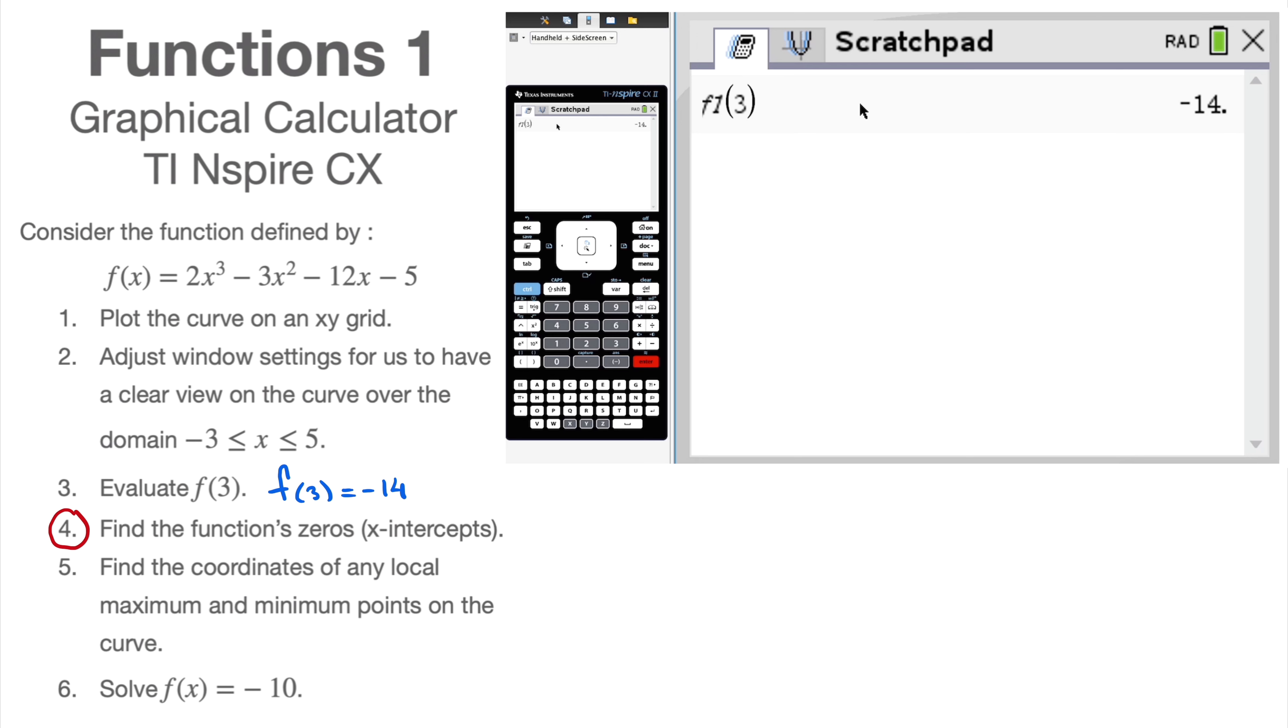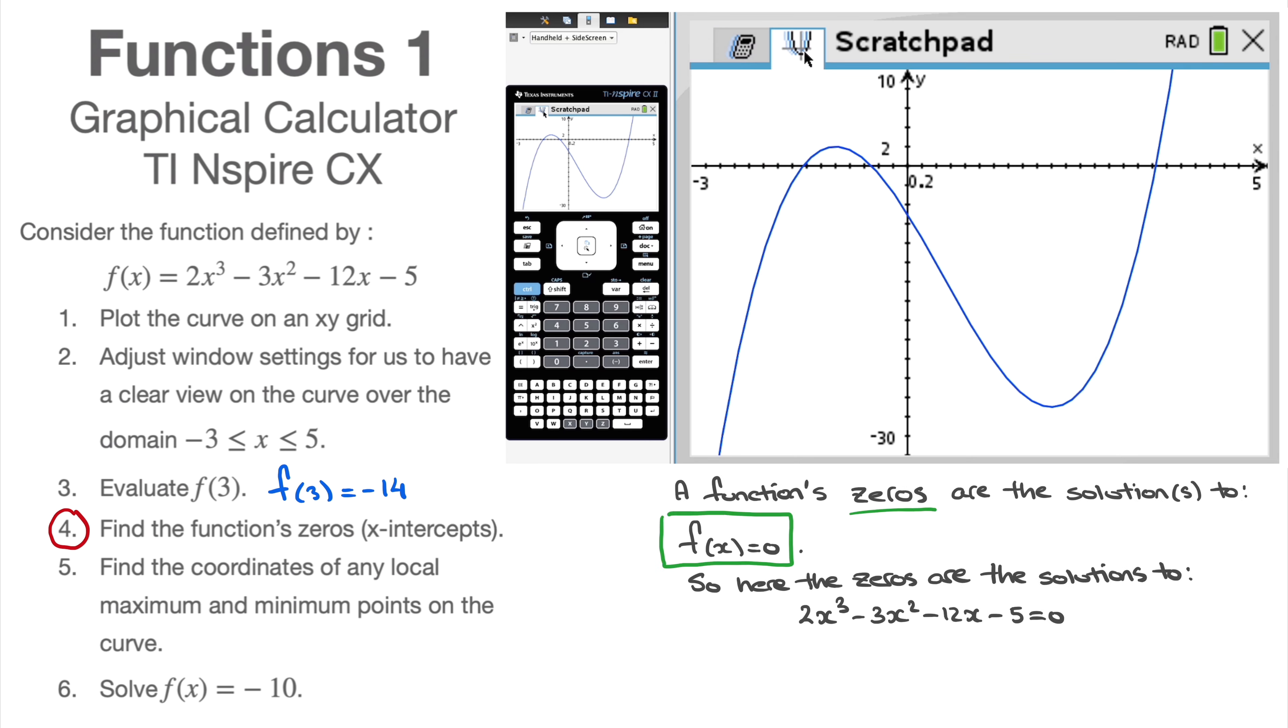Now, for the next question, we're told, find the function's zeros, and I add it here in parentheses, the x-intercepts. A function's zeros are technically the values of x at which the function equals to zero. And we can find that graphically. Let me insist, though. In fact, you'll see when I share this with you, what I'm writing on my iPad screen. Let me insist, though. Those are the solutions, solutions to f(x) = 0. So a function's zeros are where the values of x at which the curve crosses the x-axis.